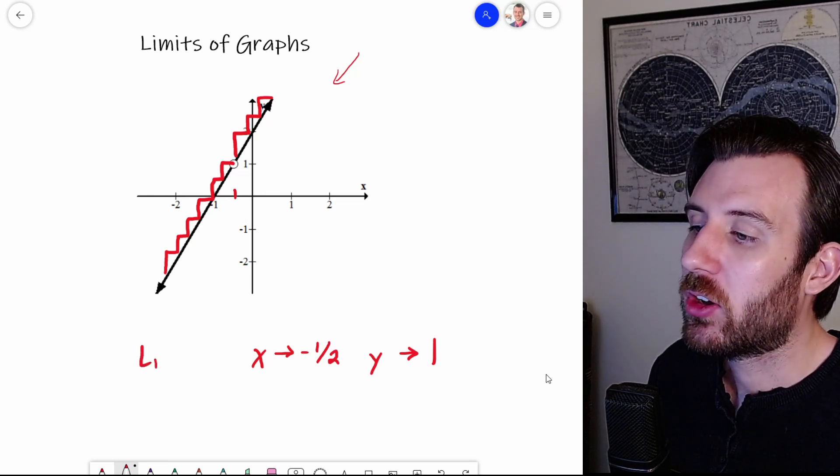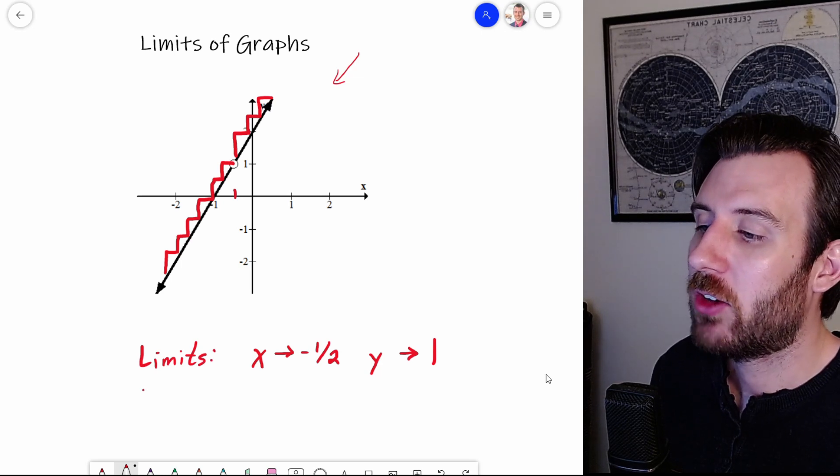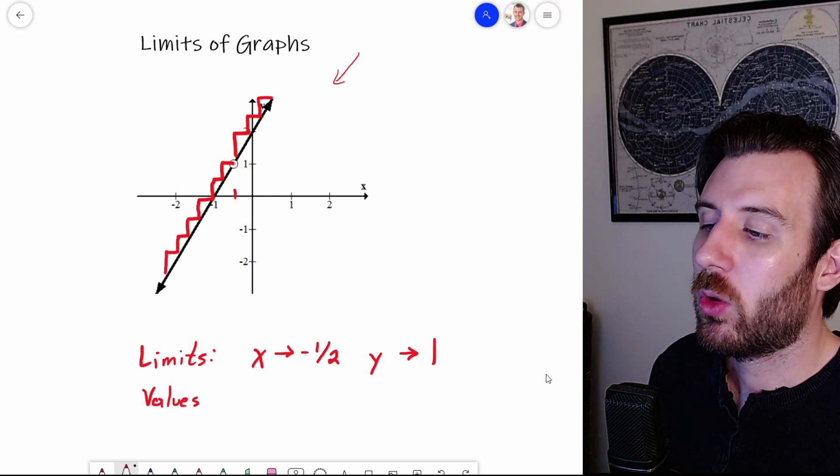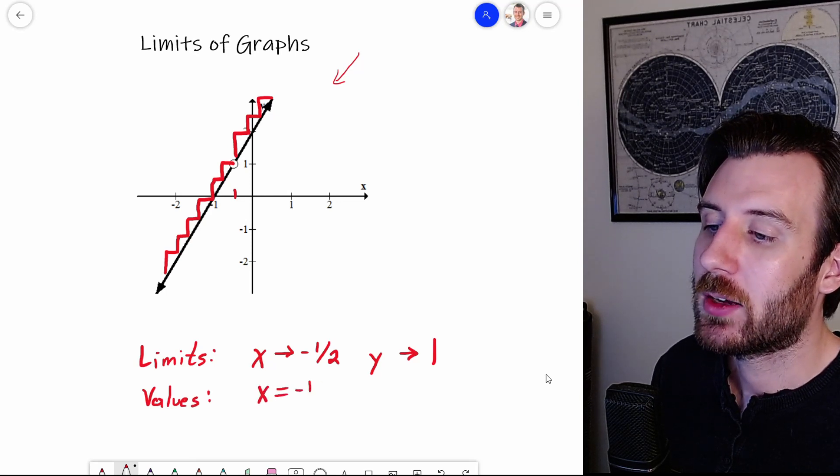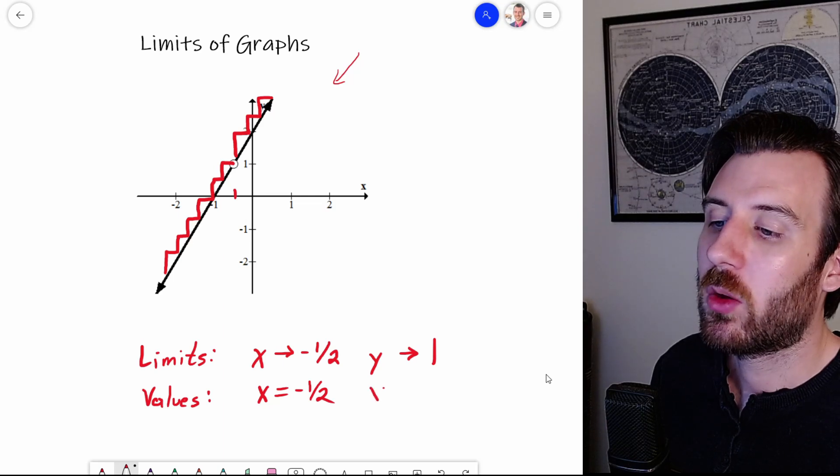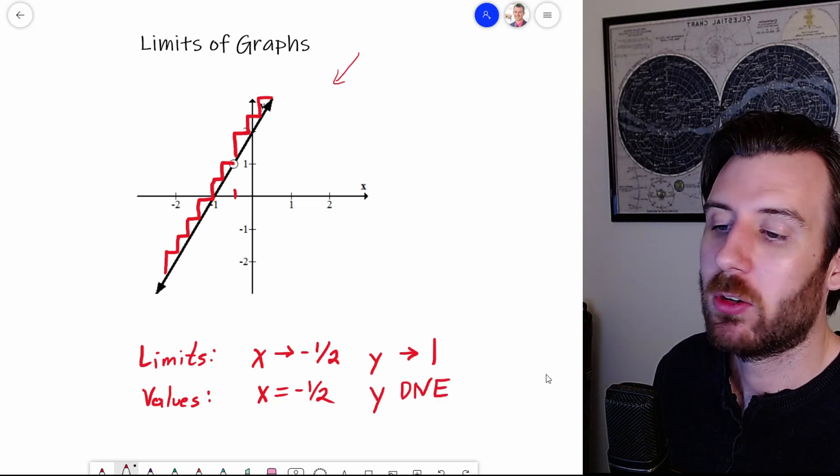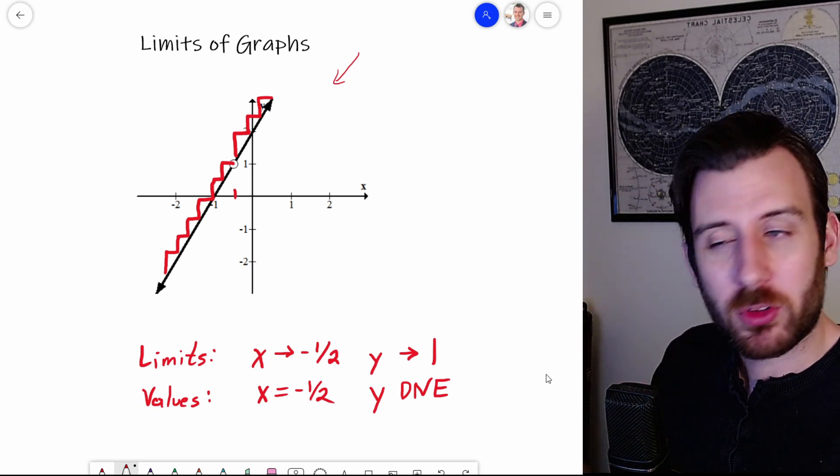So this right here is the logic of limits. But if I asked you about the logic of values, or the algebra, or the what is, if I said what happens when x equals negative one half, we would say that y does not exist, because there is a hole there. Notice the contrast between these two models of logic.